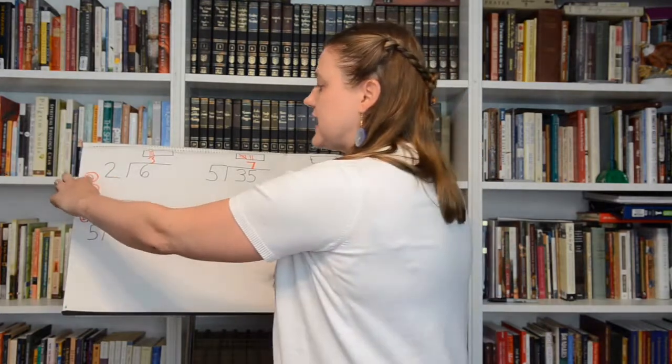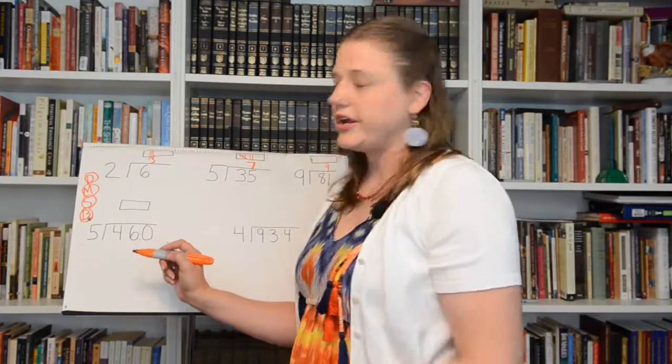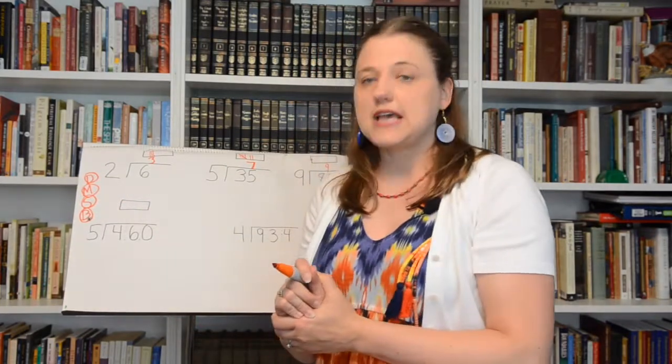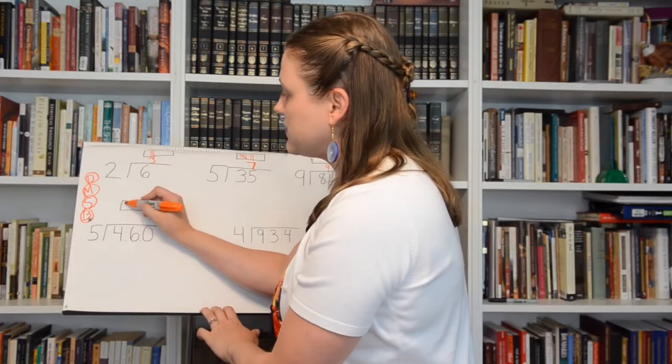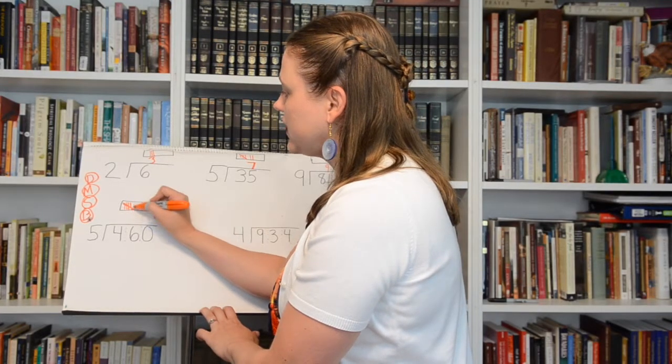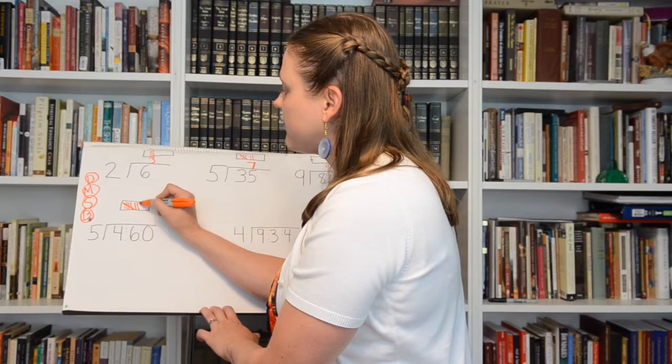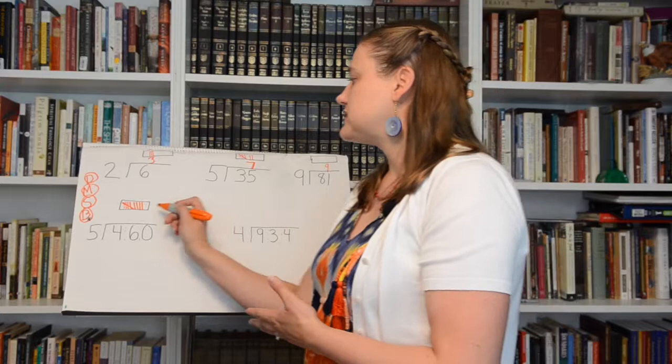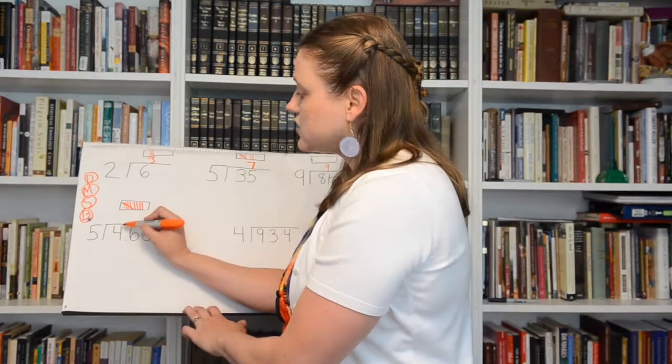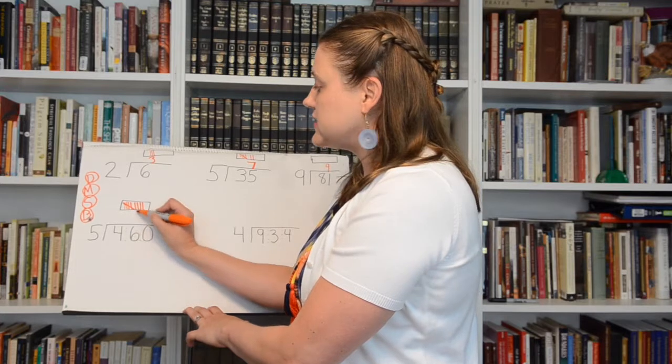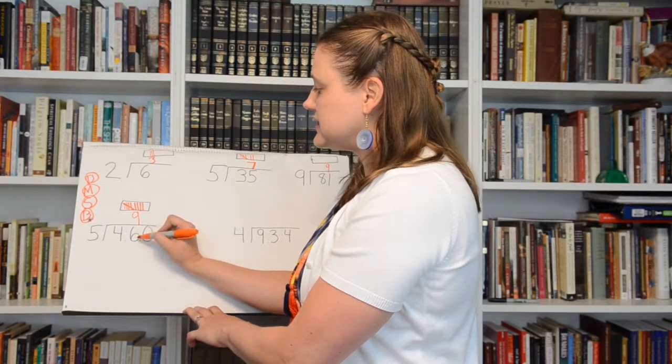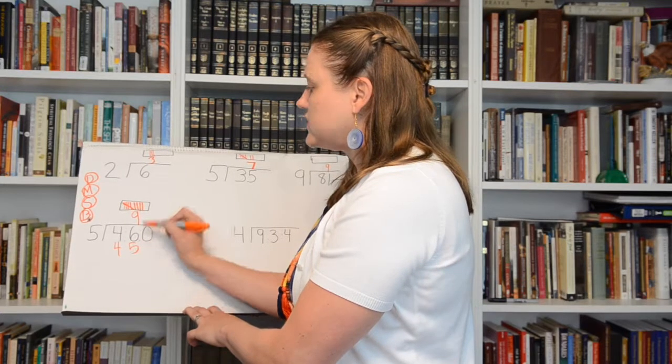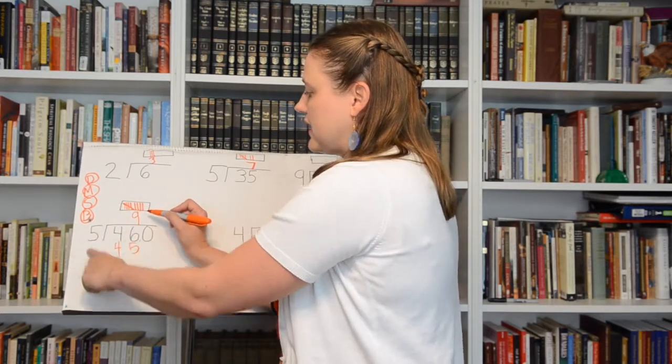We're going to put our finger here and we're going to say divide. So five, will it go into four? No. So we're still on divide. Will five go into 46? Yes. So we're going to count how many times. Five, ten, fifteen, twenty, twenty-five, thirty, thirty-five, forty, forty-five. I'm going to look at my tally marks and I'm going to say that was nine tally marks. So since it wouldn't go into the four and it went into 46, it goes above the six. So nine times five was forty-five.